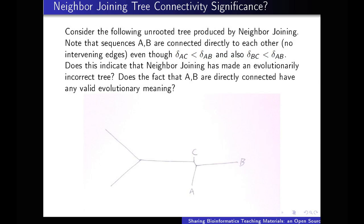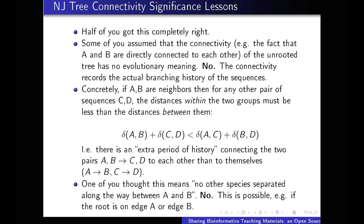Another simple example is designed to probe a biologist's understanding of additive versus ultrametric distances in phylogeny — giving a case where the distance from sequence C to A versus C to B is less than the distance between A and B, which are direct neighbors in the tree. This probes whether students really understand the meaning of the tree structure. Based on the kinds of responses I get, I can classify exact kinds of errors and give very explicit feedback to each individual about how they're going wrong.